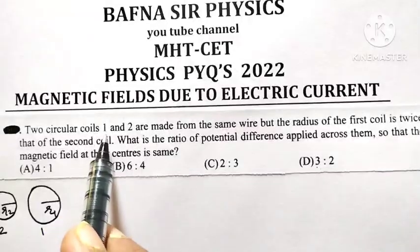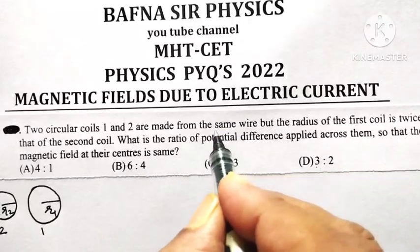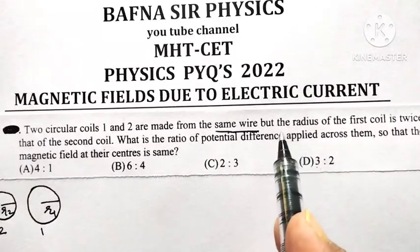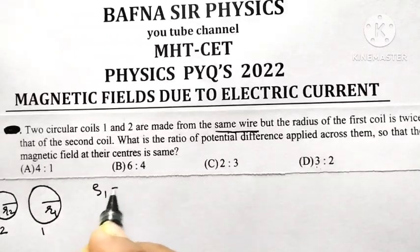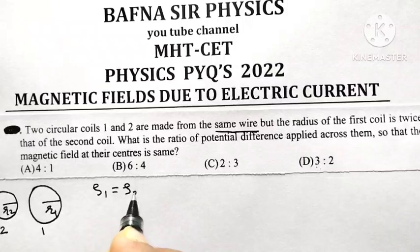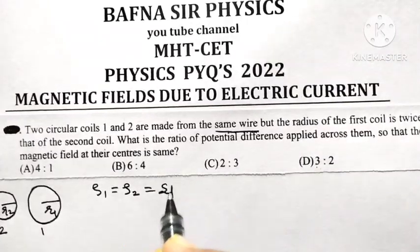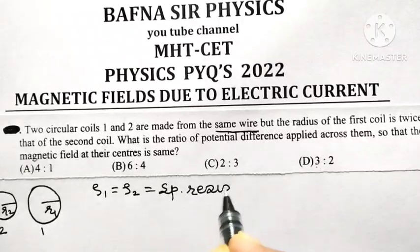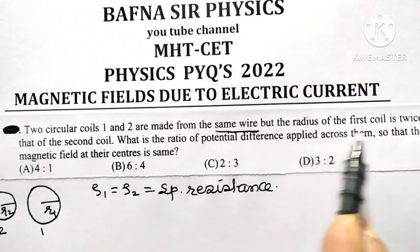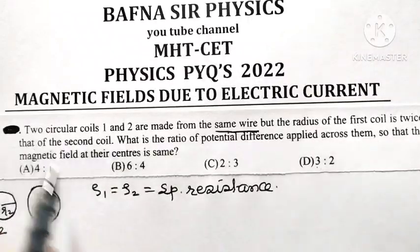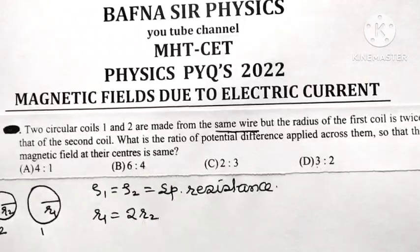Two circular coins, say one and two, they are made from the same wire. Since they are made from the same wire, the material of the wire is same, so the specific resistance of the wire is also same. But the radius of the first coil is twice that of the radius of the second coil.